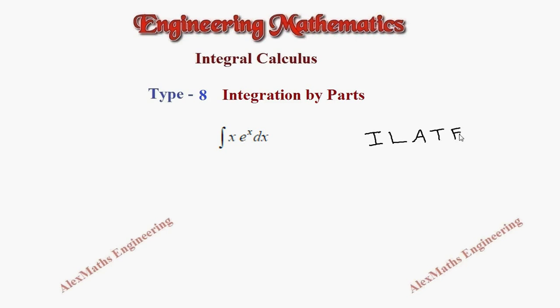Let's mark what functions we have. We have algebraic and we have exponential. What comes first in this order of ILATE is taken as u, which is x.